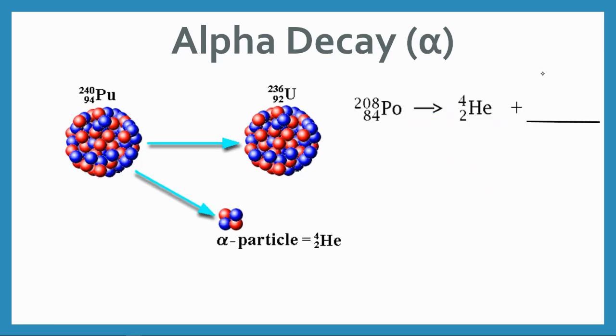We can write this as an equation. When this particle, this atom, this nucleus decays, it's going to break apart into two things. One of those things is this new element, nucleus, and one of them is this alpha particle.